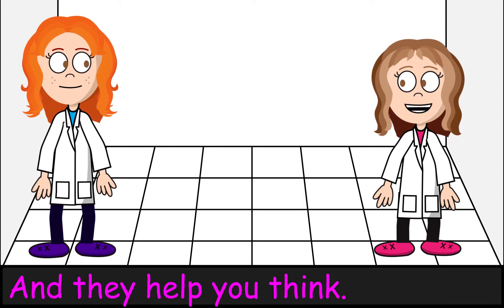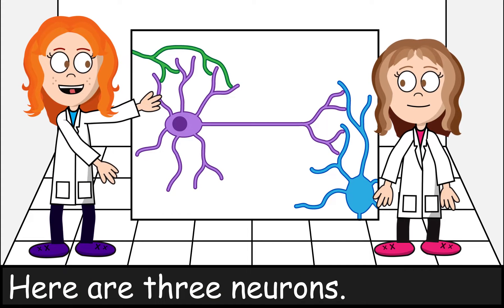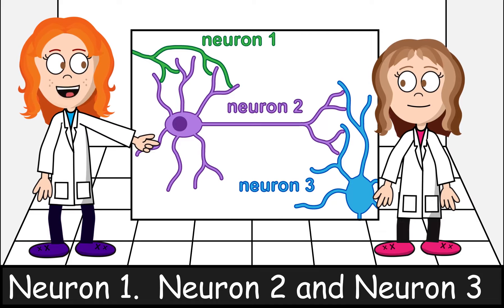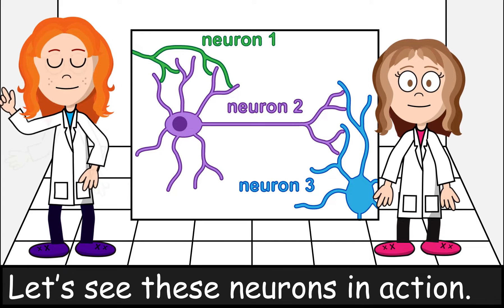That's right, and they help you see. Here are three neurons. Neuron 1, neuron 2, and neuron 3. Let's see these neurons in action.